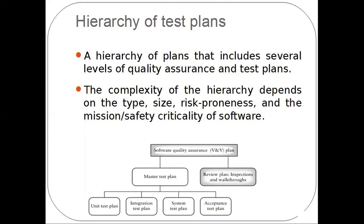The first level is the software quality assurance VnV plan. It consists of all the verification and validation activities to be carried out, as well as activities related to the reviews and audits. The next level is the master test plan and the review plan. The master test plan consists of the overall description of requirements-based testing, and the review plan consists of walkthroughs and inspections.